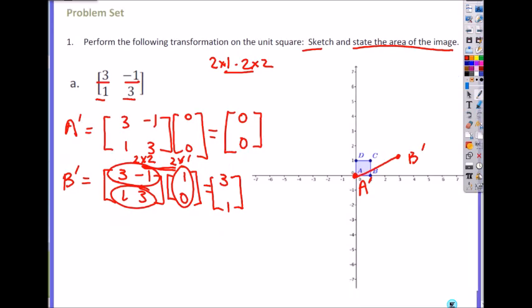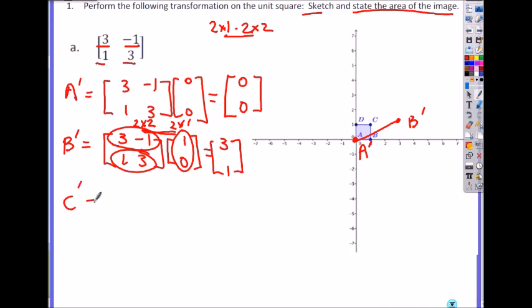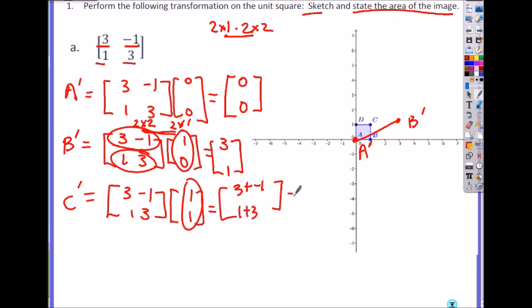What about C? C is 3, negative 1, 1, 3. C is 1, 1, right? So when you multiply, you get 1 times 3 is 3 plus 1 times negative 1 is negative 1. Now with the second row, 1 plus 3 because it's 1, 1, so I get 2 comma 4.